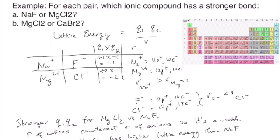Let's look at an example comparing the lattice energy of sodium chloride and magnesium chloride, and determine which lattice energy is going to be more exothermic. Lattice energy is proportional to the charges of each of the ions divided by the distance. For NaCl: sodium is +1, chloride is −1, giving a product of −1. For MgCl₂: magnesium is +2, chloride is −1, giving a product of −2. The larger the charge product, the more exothermic the lattice energy.